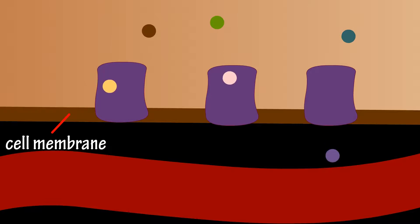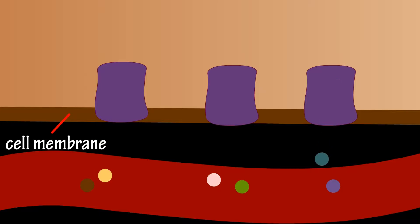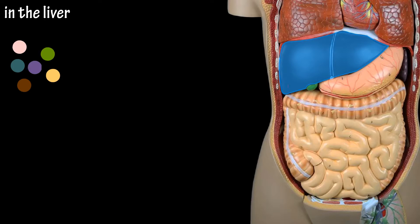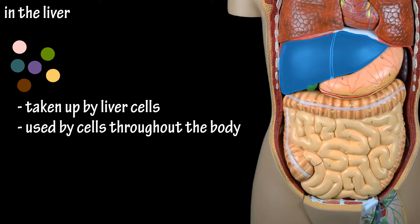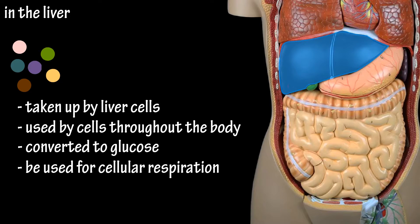On the other side of the enterocyte cells, the amino acids are transported out of the cell into the blood, where they then travel to the liver. Some of the amino acids will be taken up by liver cells, some will be used by cells throughout the body as building blocks of new proteins, and if there are excess amino acids, they can be converted to glucose, or they can be broken down and used as fuel for cellular respiration.